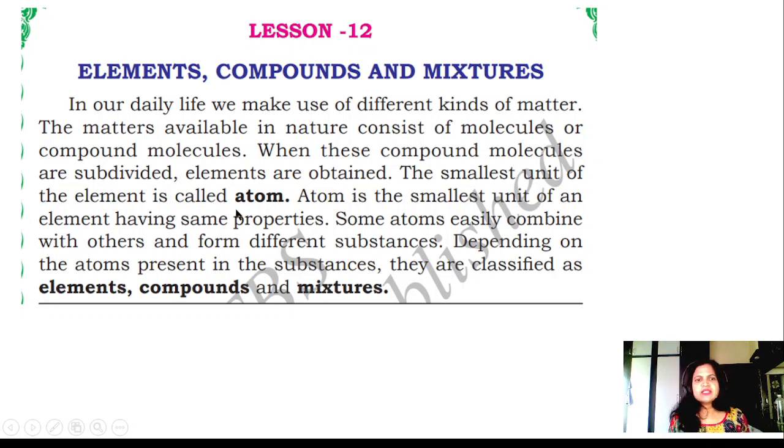The smallest unit of the element is called atom. Atom is the smallest unit of an element having the same properties. Some atoms easily combine with others and form different substances. Depending on the atoms present in the substance, they are classified as elements, compounds and mixtures.